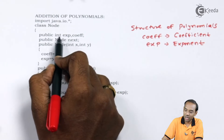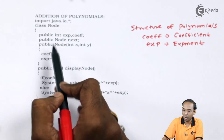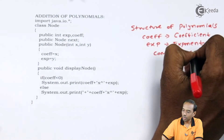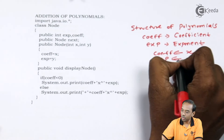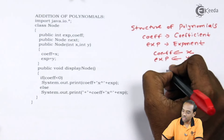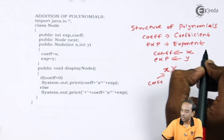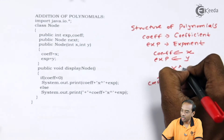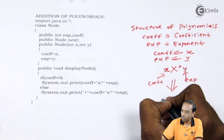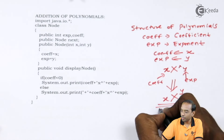I have also declared a variable called `next`, which is the reference variable of the Node class. After that, I have created the constructor of the Node class, passing the value of x to the coefficient and y to the exponent part. The structure of the polynomial will be in the form: x is the coefficient, and y is the exponent, representing x * variable^y.